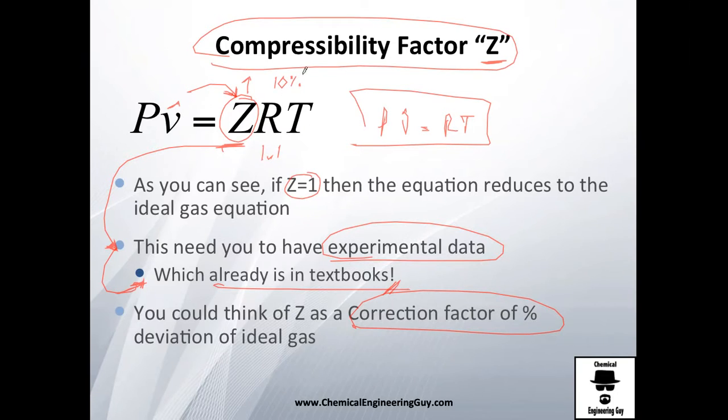Or if this Z value is about 1.0 or even 0.99, I will tell you that this is a deviation of 1% with respect to the ideal gas. So that's what I think is awesome from this Z value.